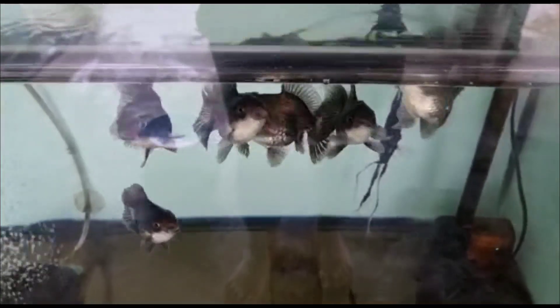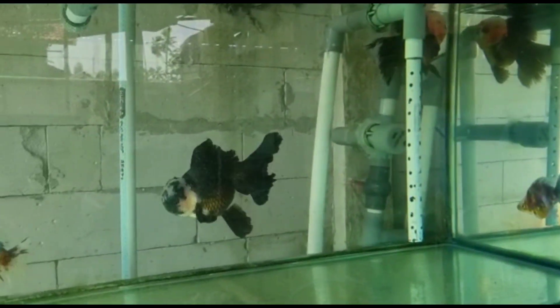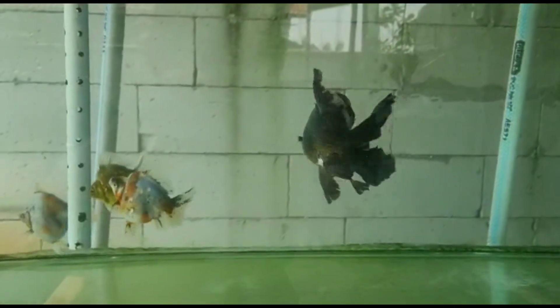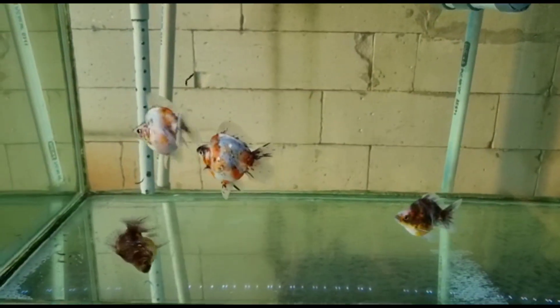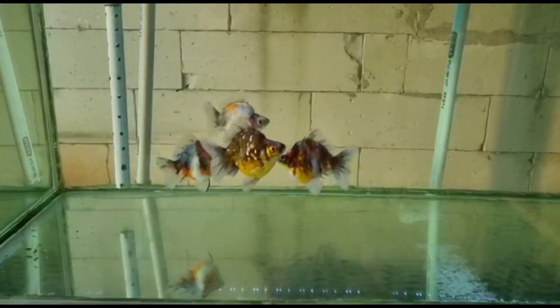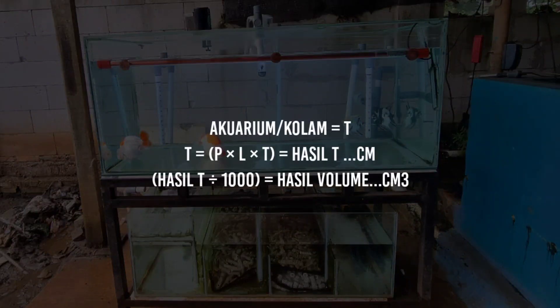Yang ketiga, populasi ikan. Air yang kotor atau kusam juga bisa terjadi dari padatnya populasi ikan dalam kolam atau akwarium penghobi. Akan kami beri contoh cara menentukan populasi ikan maskoki. Caranya: akwarium atau kolam — panjang dikali lebar dikali tinggi. Hasilnya kemudian dibagi seribu, dan hasil dari dibagi seribu tersebut merupakan hasil volume dalam liter air.